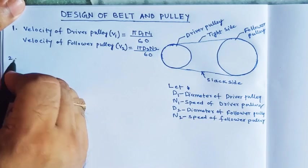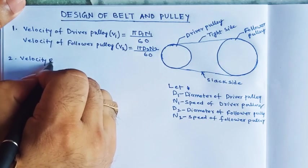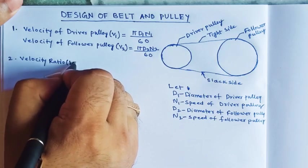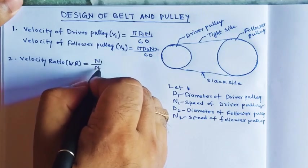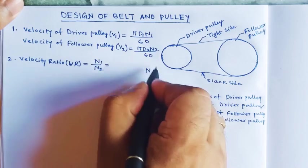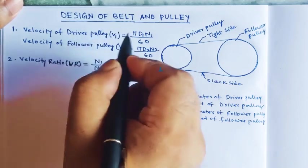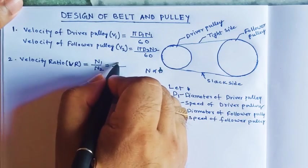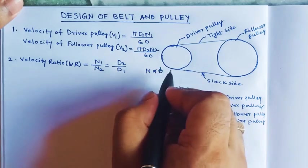Second, I shall go to the velocity ratio, which is denoted by VR. The velocity ratio is the ratio of n1 to n2. Since speed is inversely proportional to diameter when linear velocity is constant, the speed ratio equals d2 by d1. This is the velocity ratio with respect to the diameter.